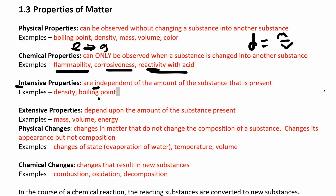Boiling point is also intensive. What's the boiling point of a gallon of water? It's 100 degrees Celsius. What's the boiling point of one milliliter of water? Also 100 degrees Celsius — it doesn't depend on how much you have. That 100 degrees Celsius is still going to be the same whether you have a gallon or a milliliter. It may take longer to boil a gallon versus a milliliter, but it's still boiling at the same point.